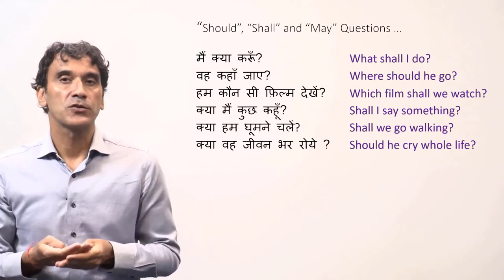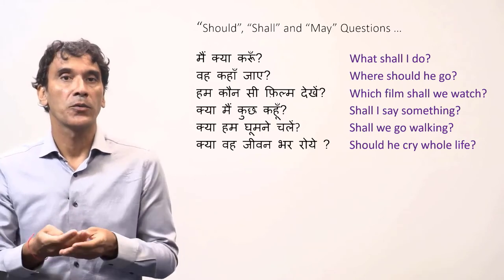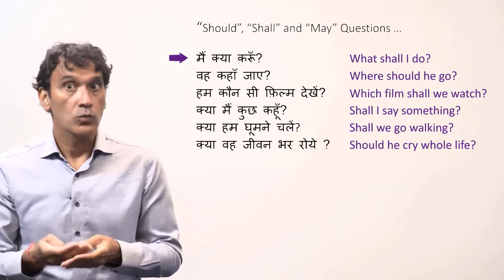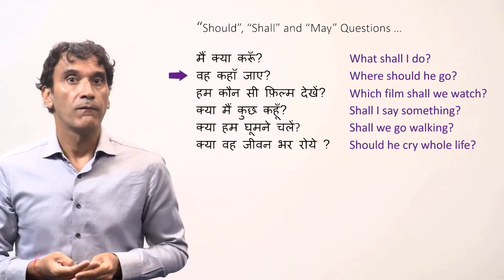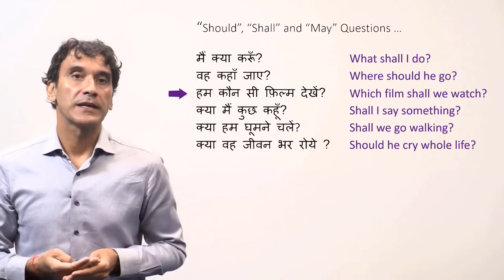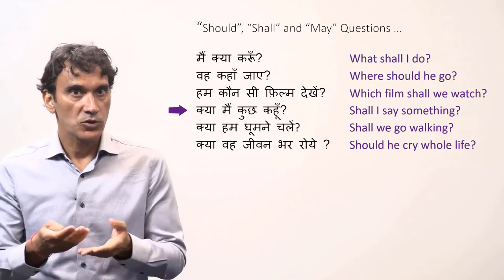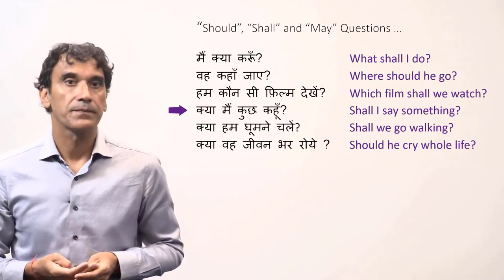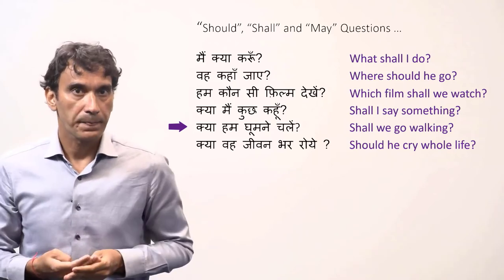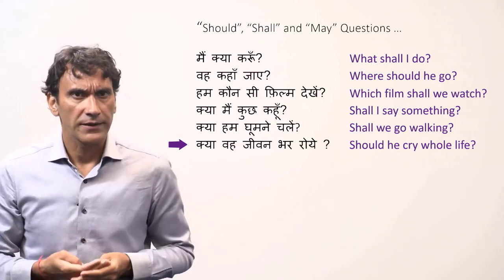This type of question in English is made with the words should, shall, or may. For example: main kya karoon — what shall I do? Woh kahaan jaye — where should he go? Hum kaun si film dekhain — which film shall we watch? Kya main kuch kahoon — shall I say something? Kya hum ghoomne chalein — shall we go for a walk? Kya woh jeevan bhar roye — should he cry his whole life?